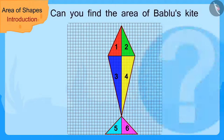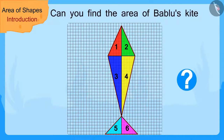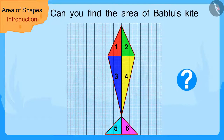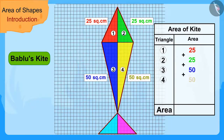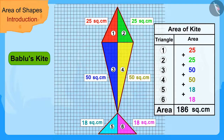'Children, can you find the area of Bablu's kite by the process you just learned? If you wish to, you may stop the video and find the answer.' We can find the area of Bablu's kite in this way — Bablu's kite has an area of 186 square centimeters.